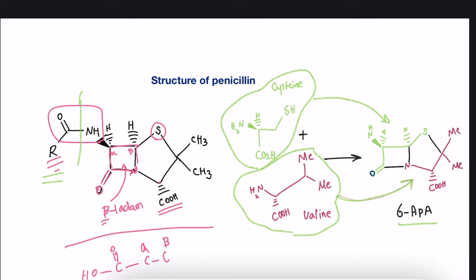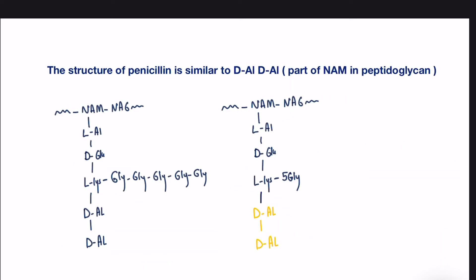So, that means the 6-APA here acts as starting material for semi-synthetic process of making penicillin. Still after we discuss the structure of penicillin, we can't really know how it works, how it can bind to the enzyme and prevent it from cross-linking the wall.